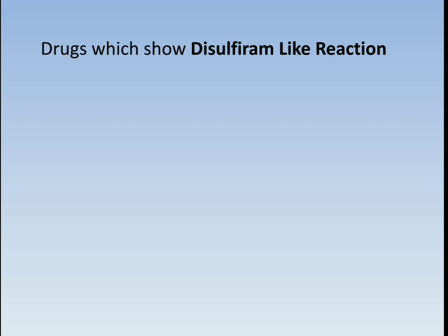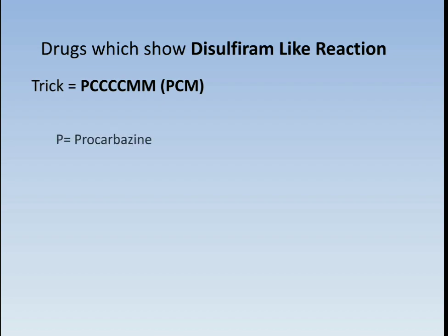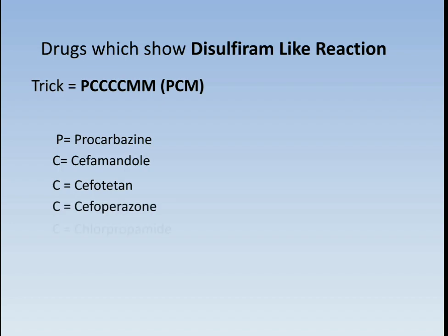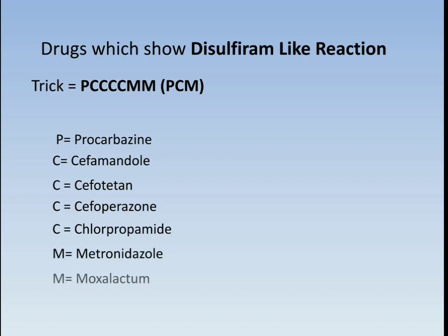Drugs which show disulfiram-like reaction — the trick is PCM, where C comes four times and M comes two times. P denotes procarbazine; C denotes cefamandole, cefotetan, cefoperazone, and chlorpropamide; and the two M's denote metronidazole and moxalactam. So the trick is P4C2M.